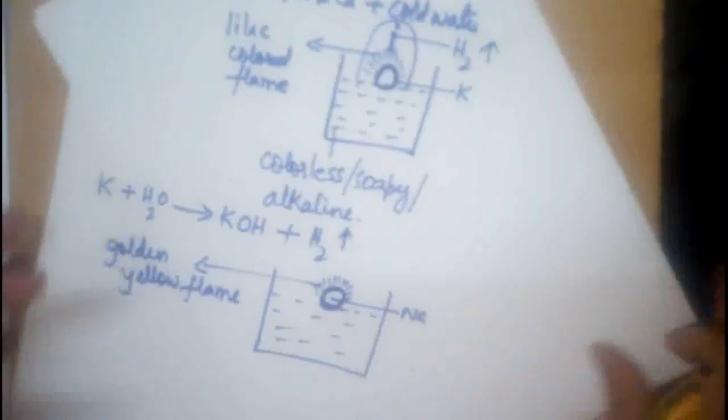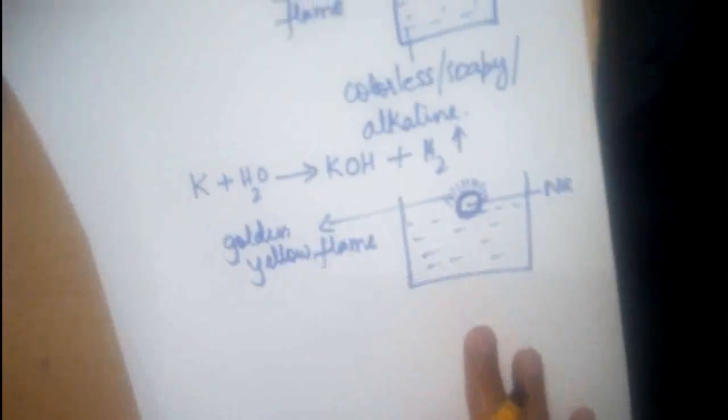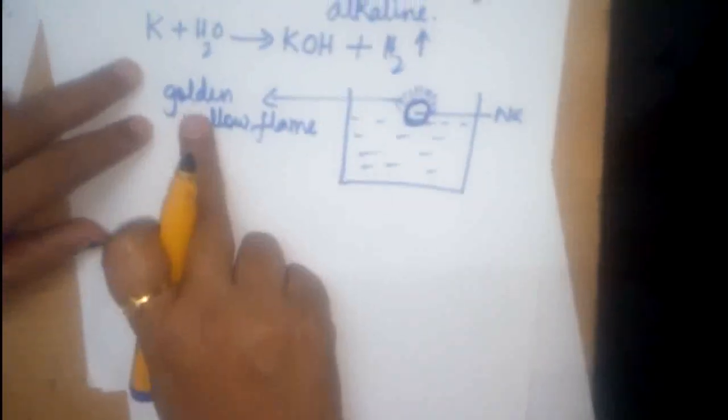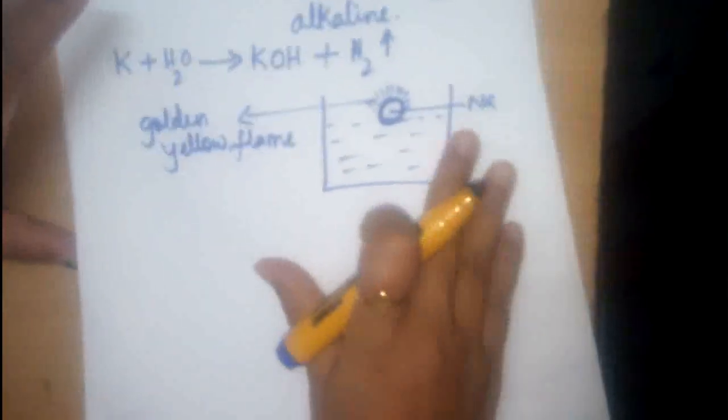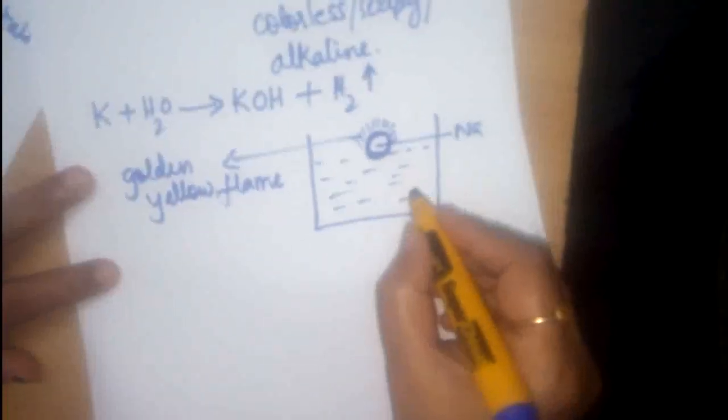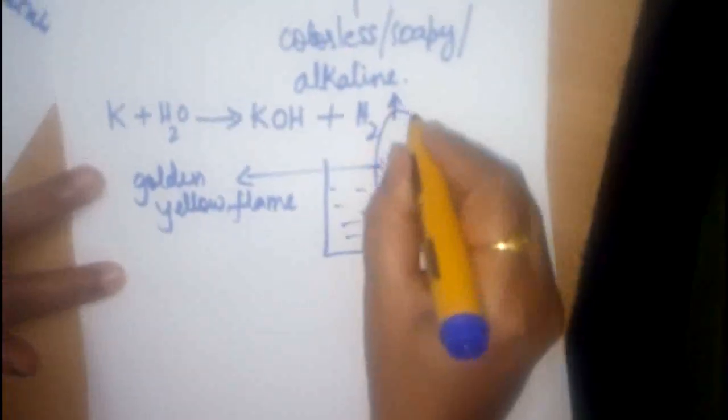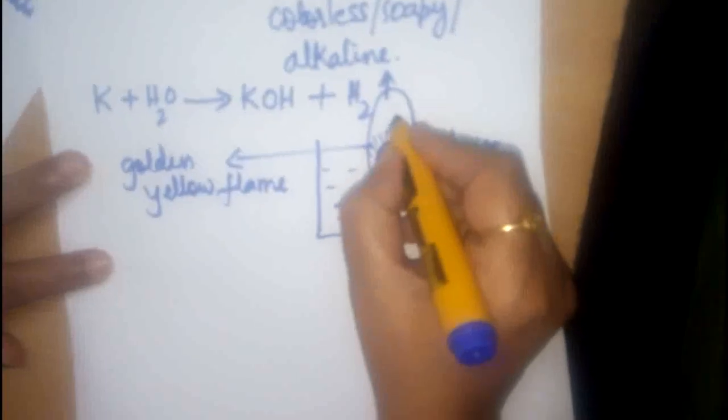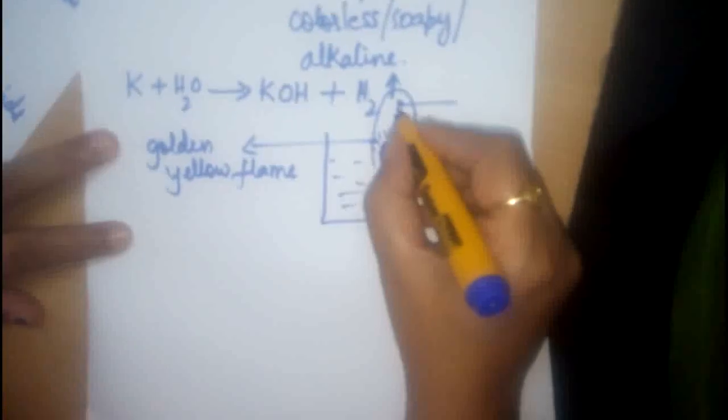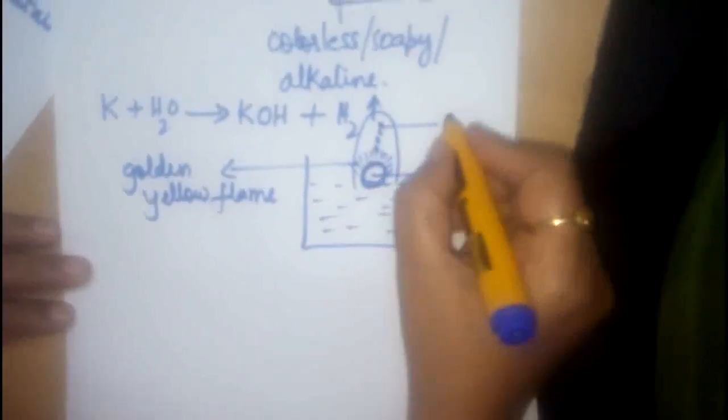As soon as when sodium comes in contact with water, it forms a globule, it darts and while darting, it burns with a golden yellow flame. And we also see bubbles of hydrogen is evolved. It is a colourless gas, but this inverted test tube, you can collect it.